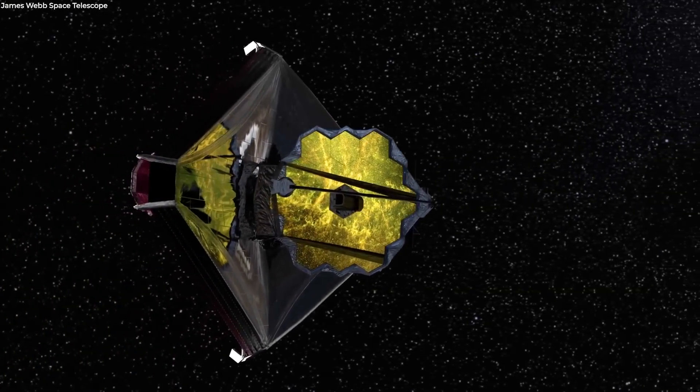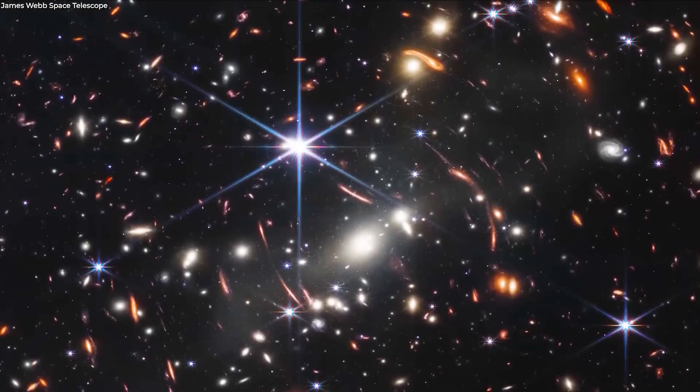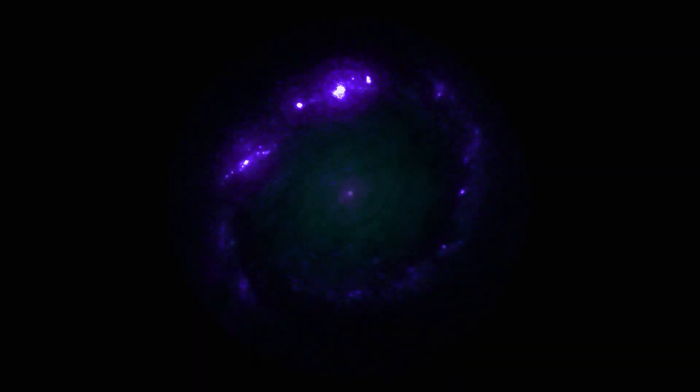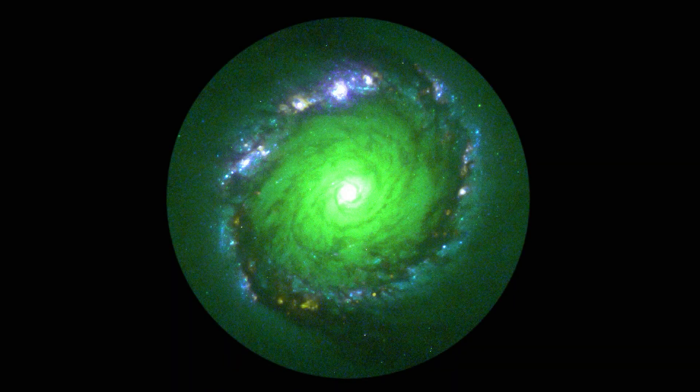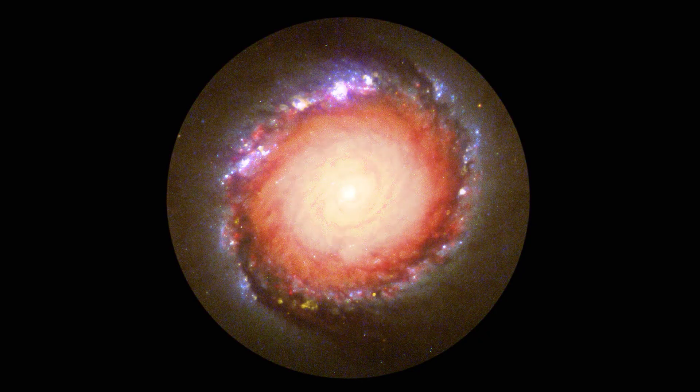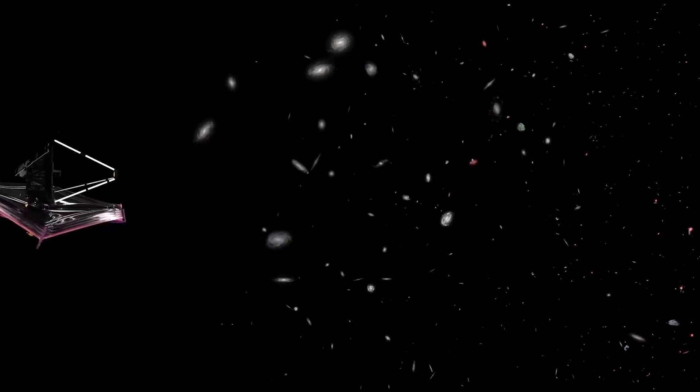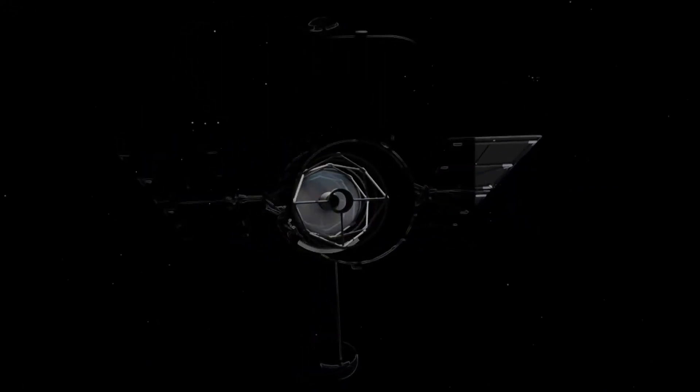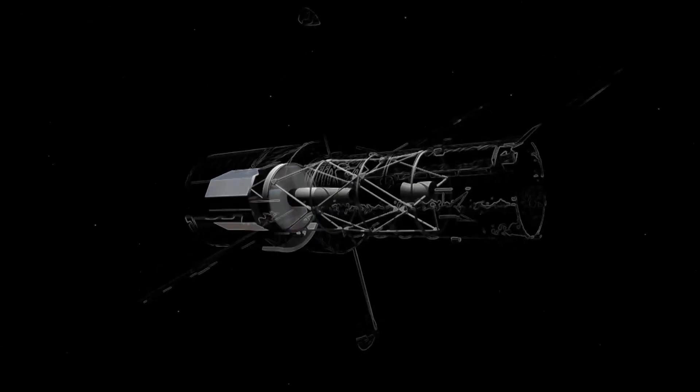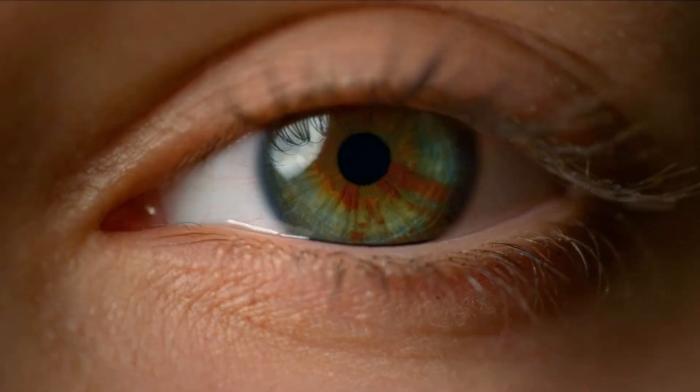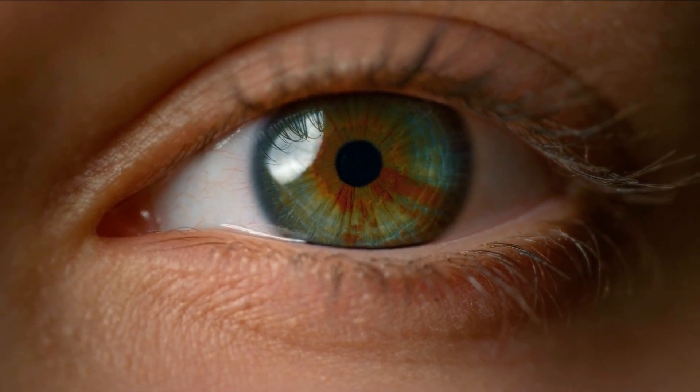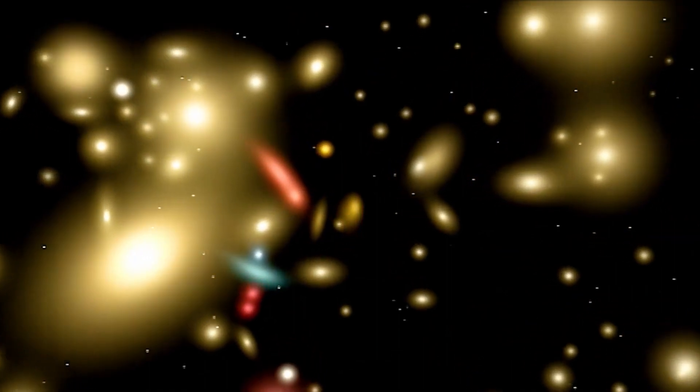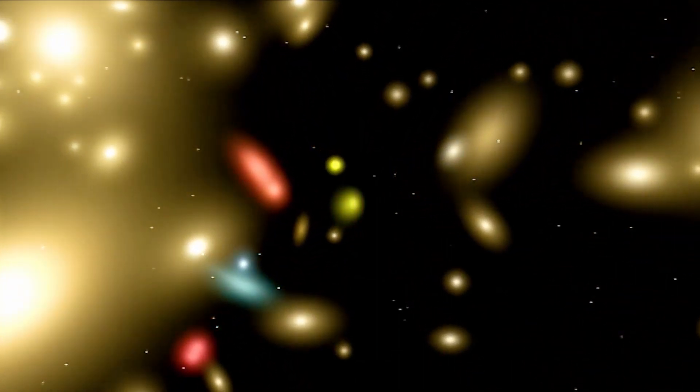But how did the James Webb Telescope spot these ancient galaxies? Because of the infrared wavelength at which its equipment operates, Webb can identify extremely far-off galaxies. The Hubble Space Telescope, which operates largely in the optical light wavelength, which is equivalent to what human eyes can see, had previously spotted a limited handful of extremely distant galaxies.